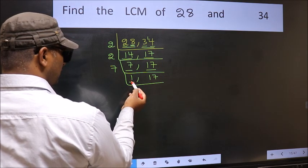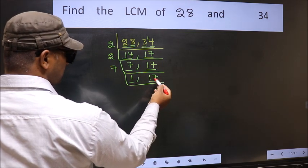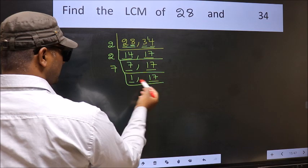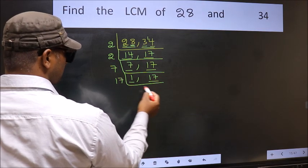Now we got 1 here, so focus on the other number 17. 17 is a prime number, so 17 times 1 is 17.